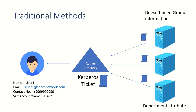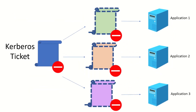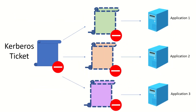Let's say my third application needs the department attribute. With a Kerberos ticket you cannot do any customization — you cannot send a specific attribute for a specific application. That means with the traditional method using Active Directory there was no way to customize the Kerberos ticket for a different set of applications. There will be one simple Kerberos ticket utilized by all applications contacting Active Directory because you cannot customize the response which AD is sending.